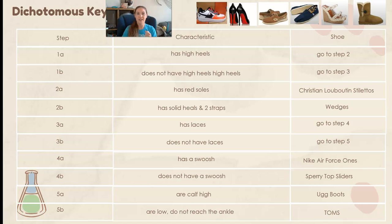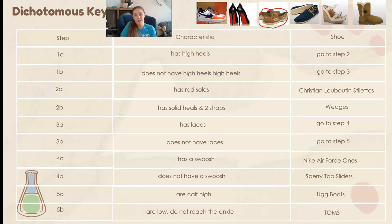The first step says: does it have high heels? If yes, go to step two. If no, continue to the next step. I want to find out what this organism is here. Step one — does it have high heels? Yes or no? The answer would be no. So I'm not going to go to step two. I'm going to go down to the next step. It does not have high heels, that's correct. So I'm going to go to step three.